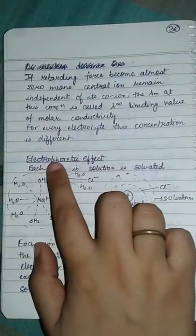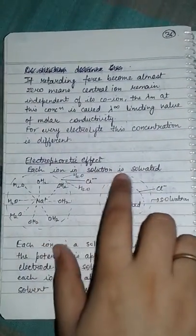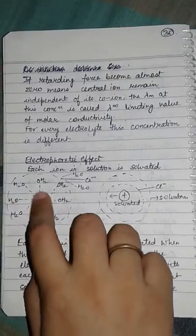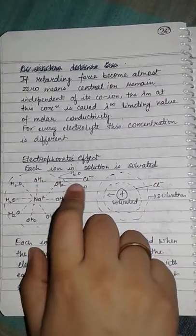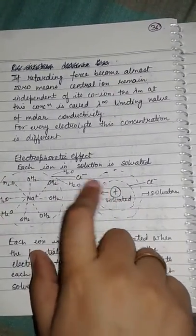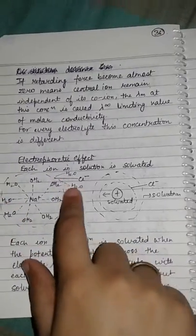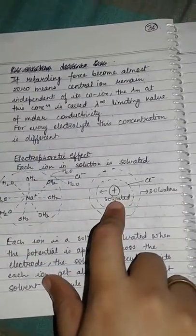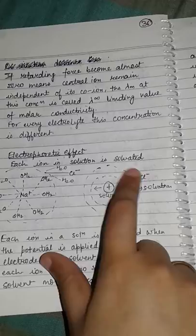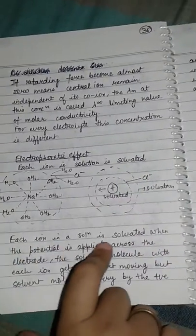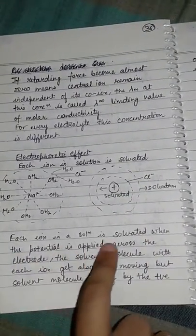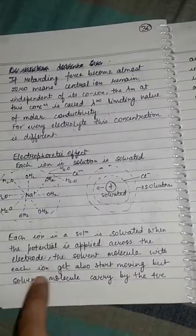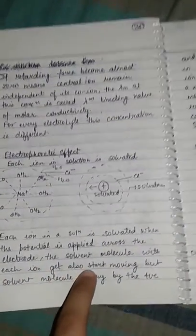Now I will discuss electrophoretic effect. Each ion in solution is solvated. This sodium plus ion is solvated by H2O ions, and this is the chloride ion, that is the co-ion. This positive ion, this chloride ion, and this solvation, each ion in a solution is solvated. When the potential is applied across the electrode, the solvent molecule with each ion gets to also start moving.